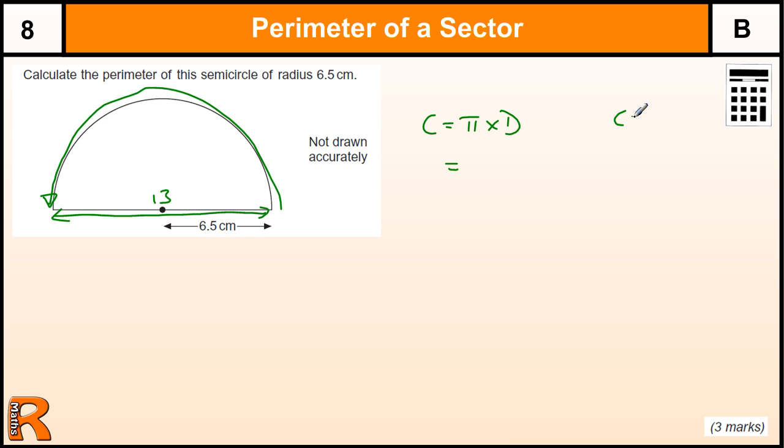Another way of writing it is 2 pi r, 2 times the radius times pi, because the diameter is 2 times the radius. But the best way I remember is pi times diameter.